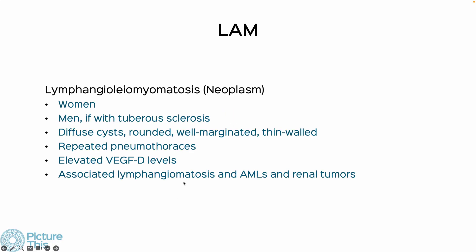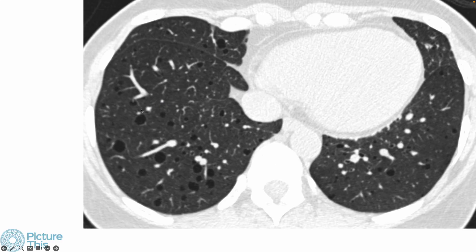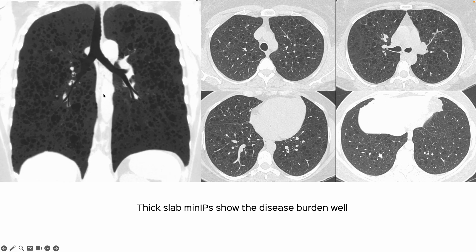Lymphangioleiomyomatosis occurs almost always in women — it may occur in men if they have tuberous sclerosis — and we get very sharply marginated rounded cysts. These patients may present with pneumothorax and almost always have elevated VEGF levels. One proposed criteria table states that if we see classic cysts plus just one of several additional findings, we can avoid a biopsy and make a definitive diagnosis of LAM.